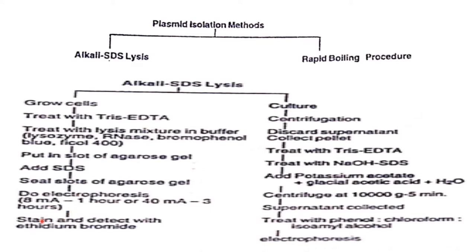In the case of culture cells for alkali SDS lysis: centrifuge the culture cells, discard the supernatant, collect the pellet, treat with Tris-EDTA, then treat with sodium hydroxide and SDS. Add potassium acetate plus glacial acetic acid plus water, centrifuge at 10,000 g for 5 minutes, collect the supernatant, then treat with phenol-chloroform-isoamyl alcohol, followed by electrophoresis.